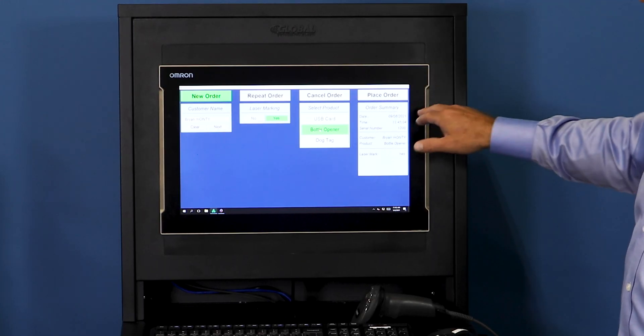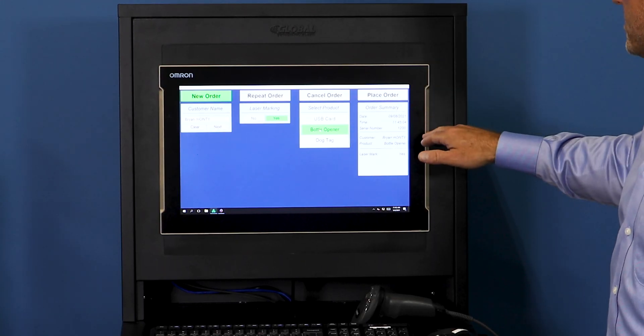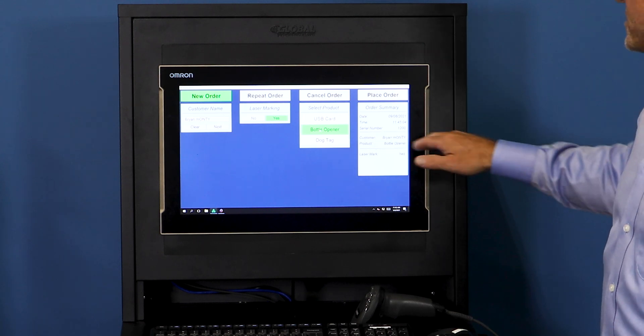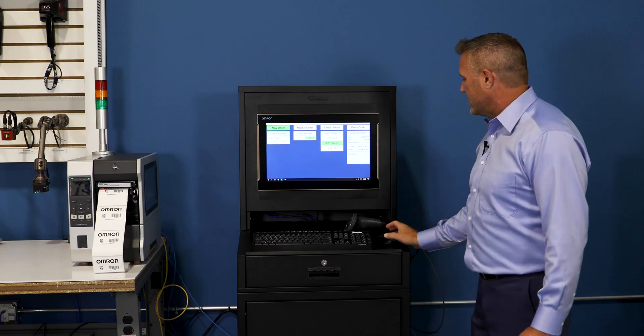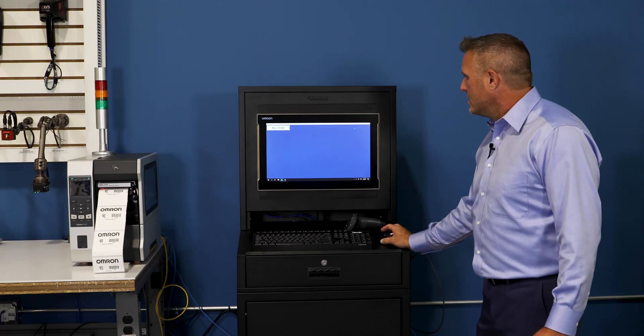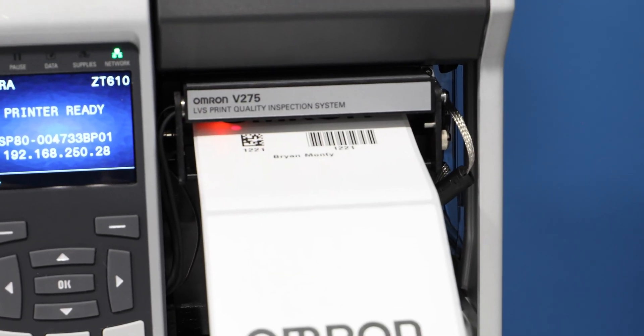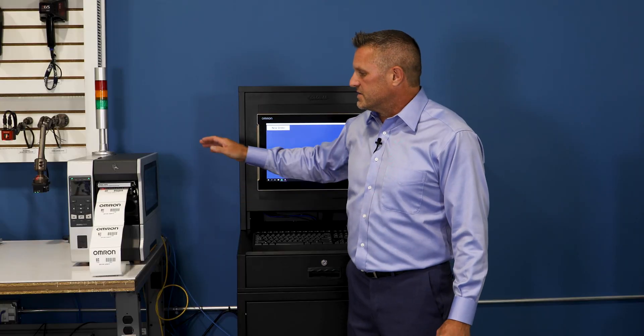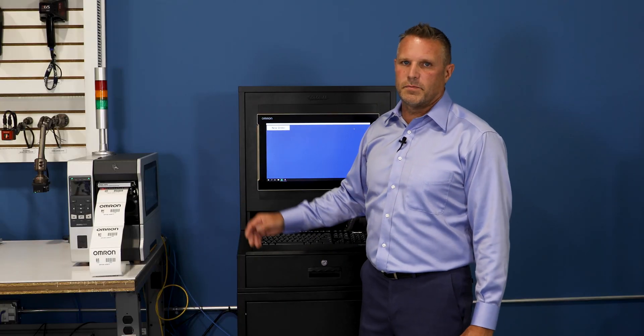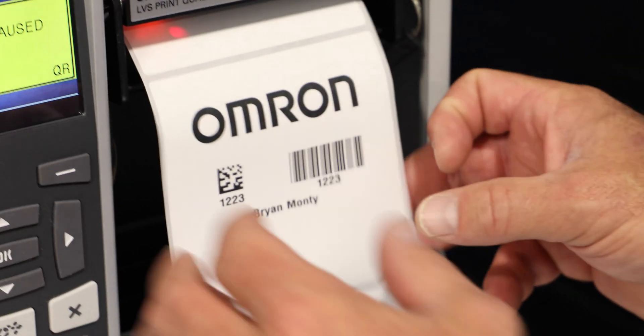We can see now that we've started a date and a time stamp. I got my customer information. I'm going to place my order and now our V275 Zebra system with inline verification from Omron is going to create our custom label as part of the tracking process. So now I'm going to peel our label off the V275 system and I'm going to take it over to our mobile robot assembly station.